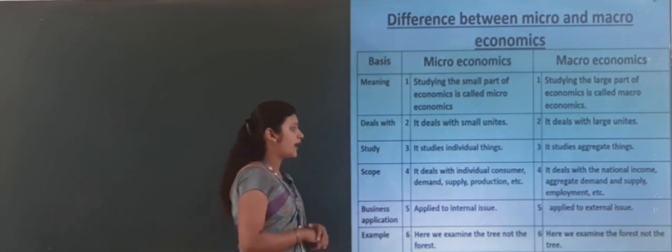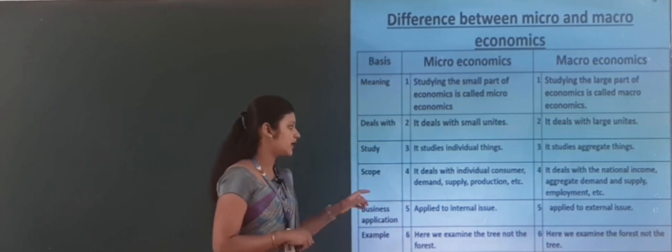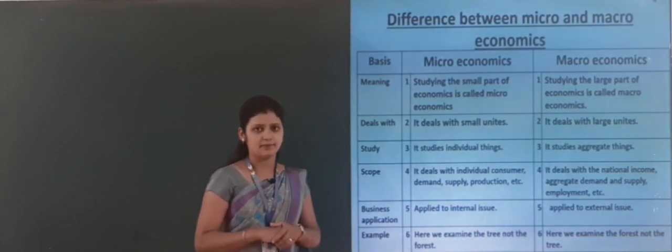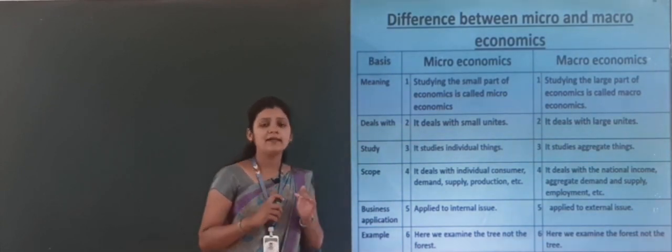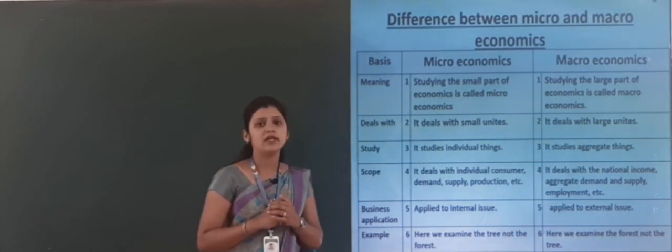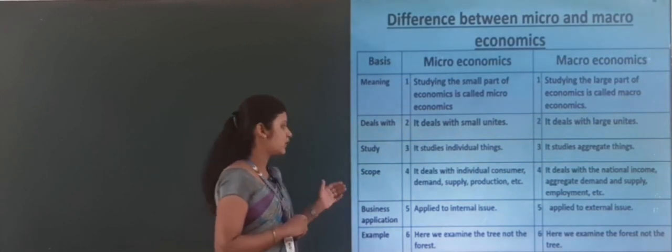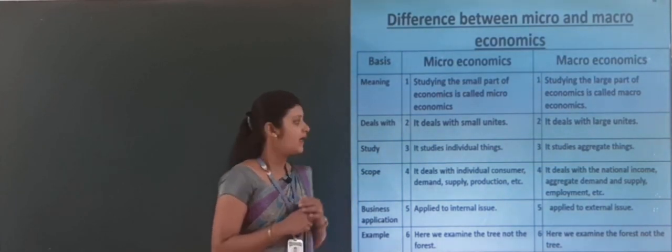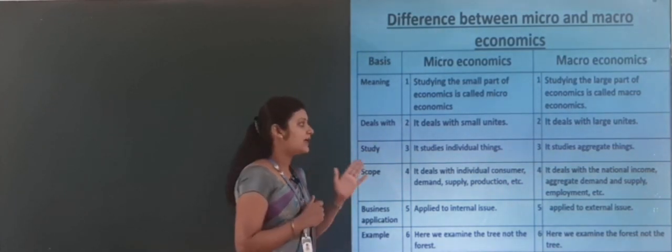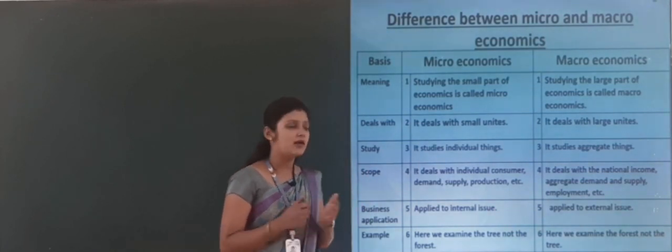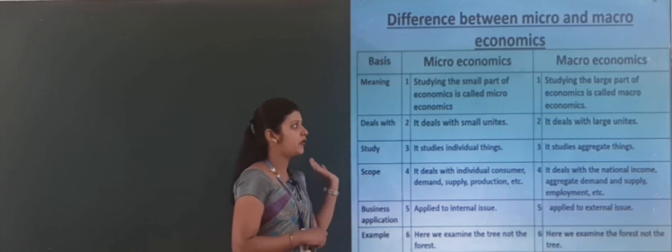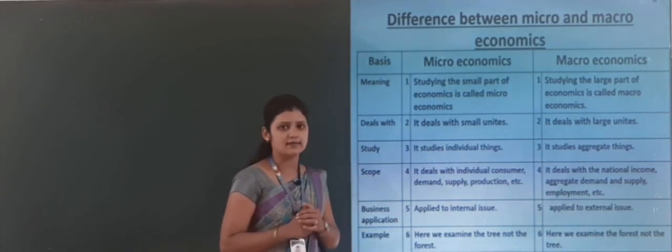The scope of microeconomics includes individual consumer, individual demand, individual supply, individual production, etc. Macroeconomics deals with national income, aggregate demand, aggregate supply, aggregate employment, etc. So microeconomics deals with individuals and macroeconomics deals with aggregates.